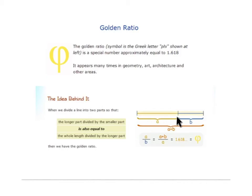The idea behind it is if you have a segment and you divide it into a part that's A long and B long and add them together. If you take the longer part divided by the smaller part is also equal to the whole length divided by the longer part. And so if you put actual numbers for A and B in here, you would get an approximation of 1.618 or Phi.